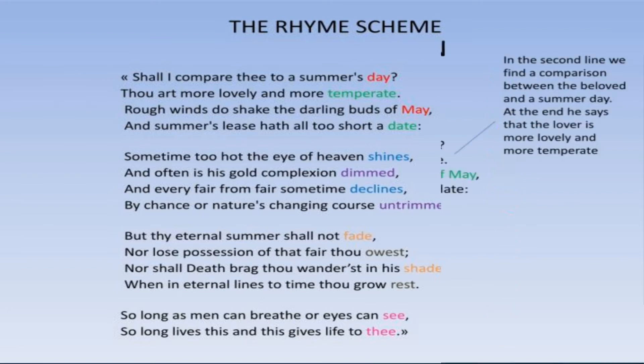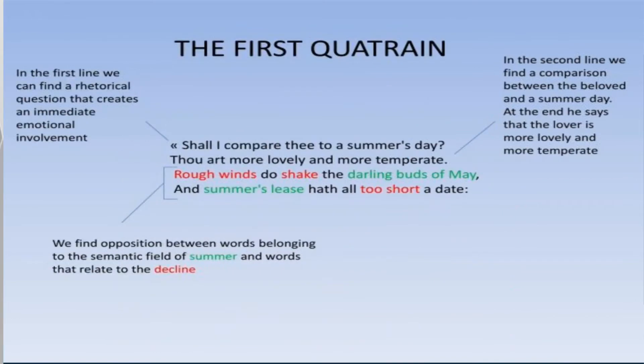So let's start the poem. First quatrain: Shall I compare thee to a summer's day? Thou art more lovely and more temperate. Rough winds do shake the darling buds of May, And summer's lease hath all too short a date. In the first line, the poet starts the poem with a question. He asks whether he should compare the young man to a summer's day, but notes that the young man has qualities that surpass a summer's day.